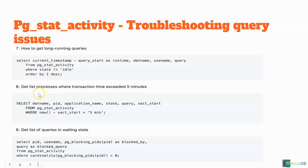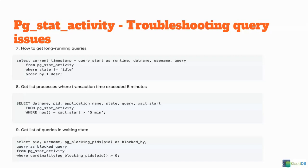And then you want to get a list of processes where the transaction time exceeds five minutes. You can use this query: SELECT datname, PID, application_name, state, query, xact_start FROM pg_stat_activity WHERE NOW() - xact_start is greater than five minutes. This gets all processes where the transaction exceeds five minutes. There may be long-running transactions where the transaction started but did not commit. In those cases, xact_start is very useful to identify long-running transactions.